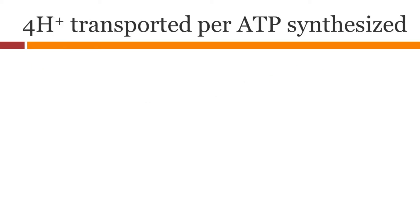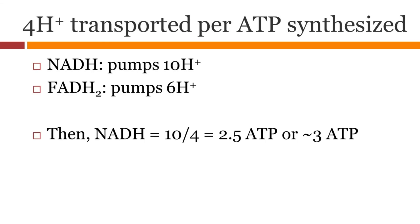Let's do some math to figure out how many ATP molecules are produced. We know that four protons need to be transported into the matrix to synthesize one ATP. We also know that NADH pumps 10 protons and FADH2 pumps 6. Therefore, NADH should produce 2.5 molecules of ATP and FADH2 would produce 1.5. However, we round it up to 3 and 2 ATP.